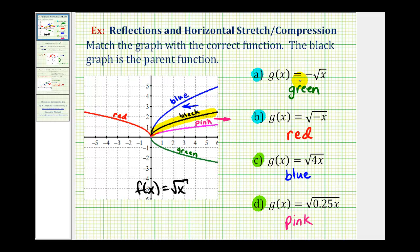You could just graph these on the graphing calculator and match them, but the idea here is to be able to recognize the type of transformation just by looking at the function. I hope you found this helpful.